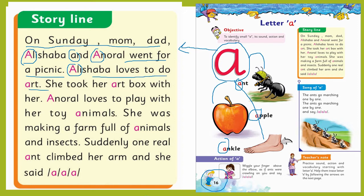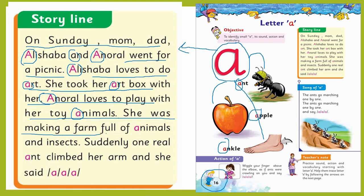Alishba loves to do art. She took her art box with her. Anoral loves to play with her toy animals. She was making a farm full of animals and insects. One real ant climbed her arm and she said: a, a, a, a, a — ant, arm.